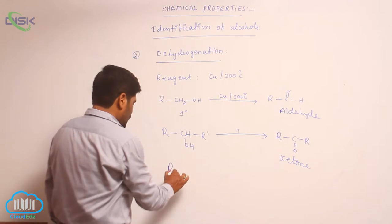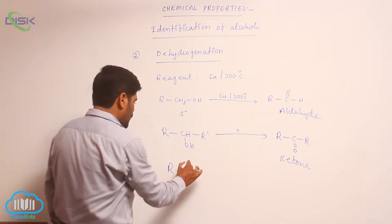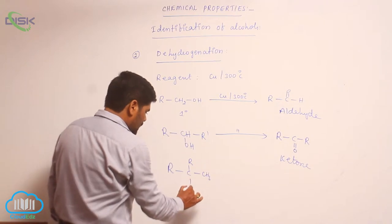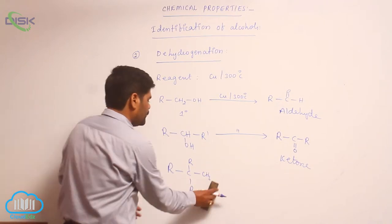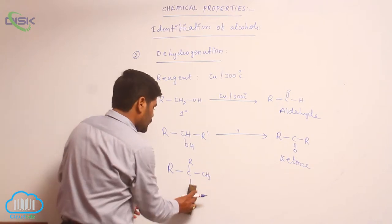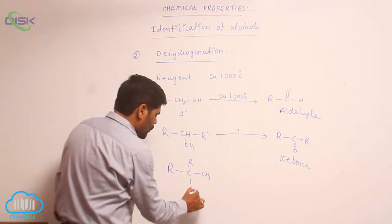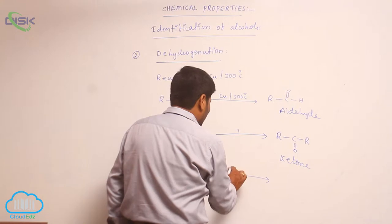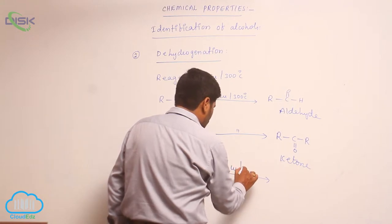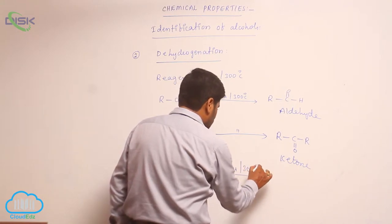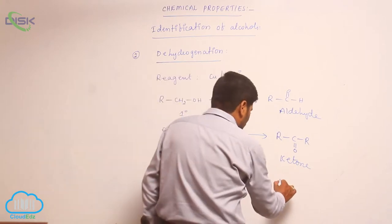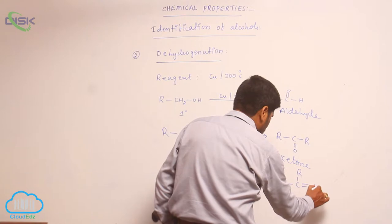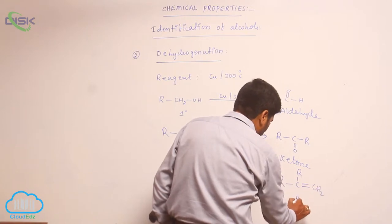Then a third-degree alcohol: R, a methyl group, R, and an OH group. When reacted with copper at 300 degrees centigrade, dehydrogenation takes place to form an alkene. So, a third-degree alcohol converts into an alkene.